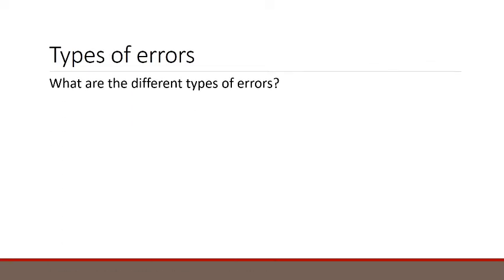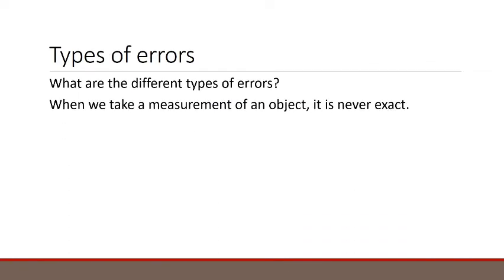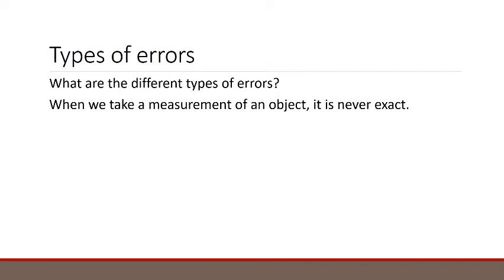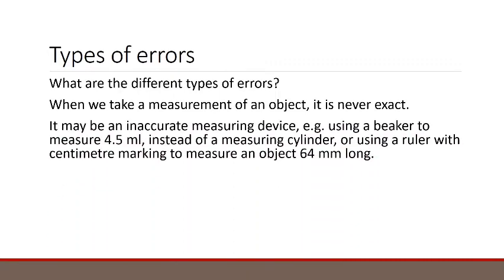Well, what are the different types of errors? When we take a measurement of an object, it is never exact. It may be an inaccurate measuring device, for example, using a beaker to measure 4.5 milliliters instead of using a measuring cylinder, or using a ruler with centimeter markings to measure an object 64 millimeters long.